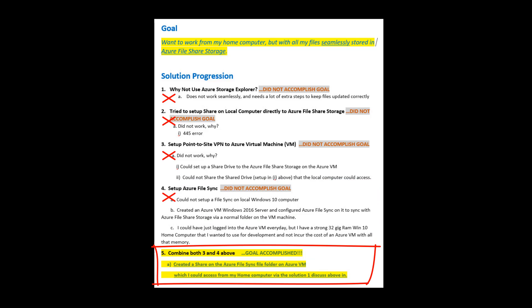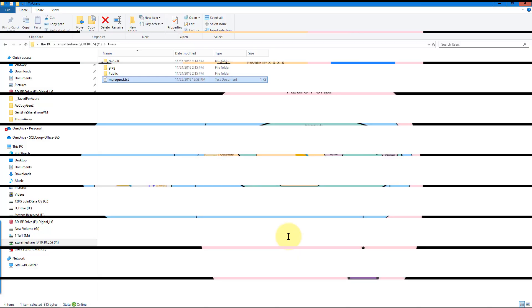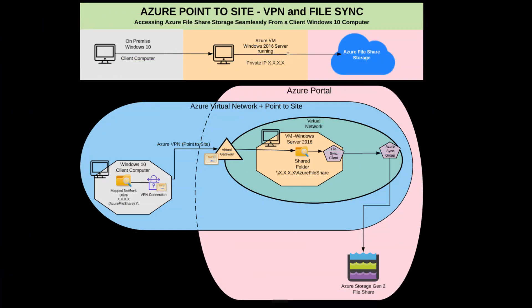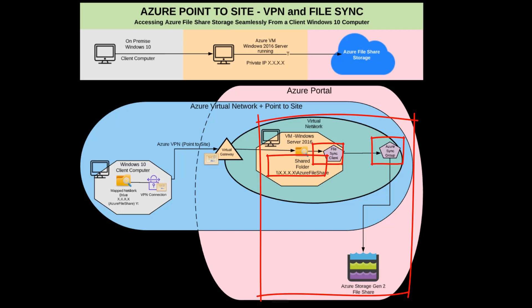I have 32 gigs of RAM at home on my Windows 10 machine and I wanted to utilize that. Running everything on a VM daily would be costly. But I did see an opportunity, which led me to my final solution. Instead of creating a file shared drive, I created a file sync folder. So I created a shared folder and used async to connect to the Azure storage. This allowed me to create a normal folder, and through the async client on the machine, sync that folder with the file storage share — not mapping it as a share, but synchronizing it.